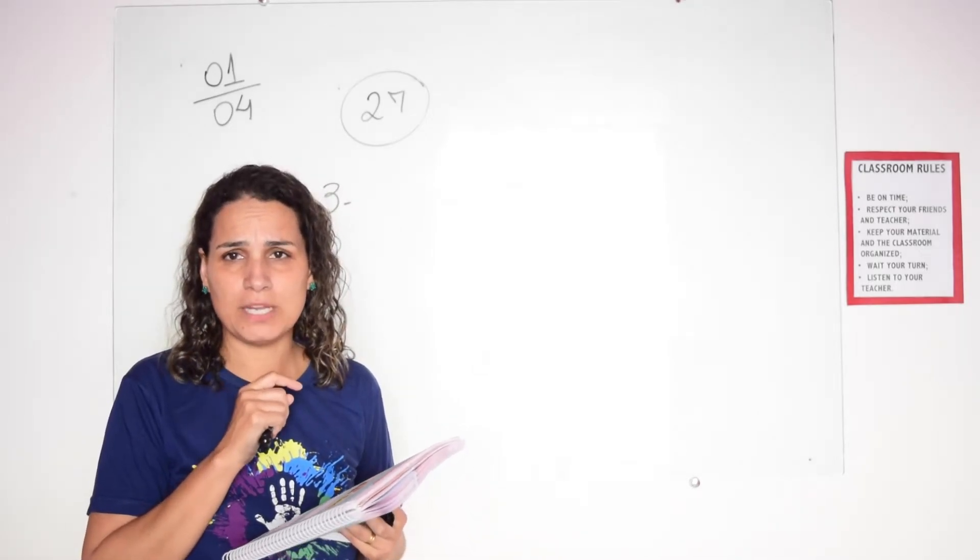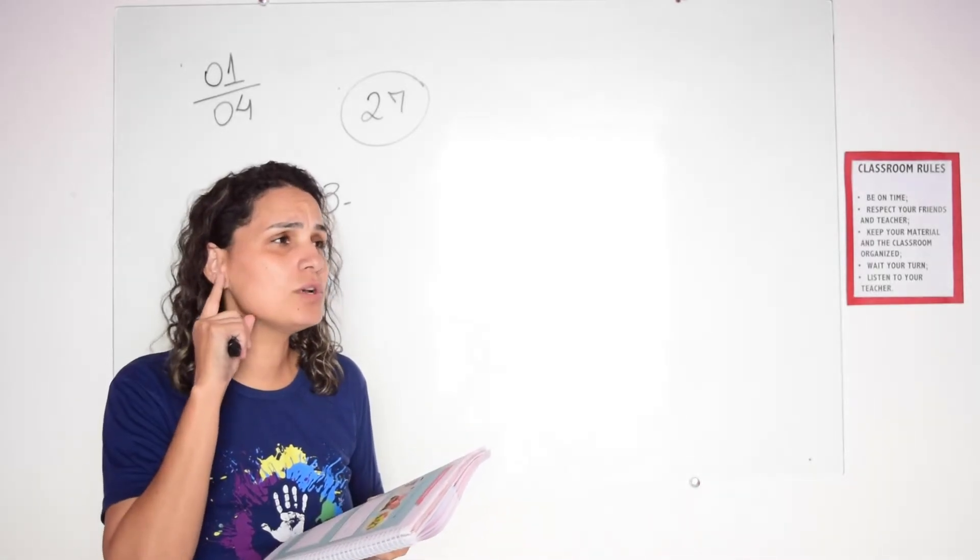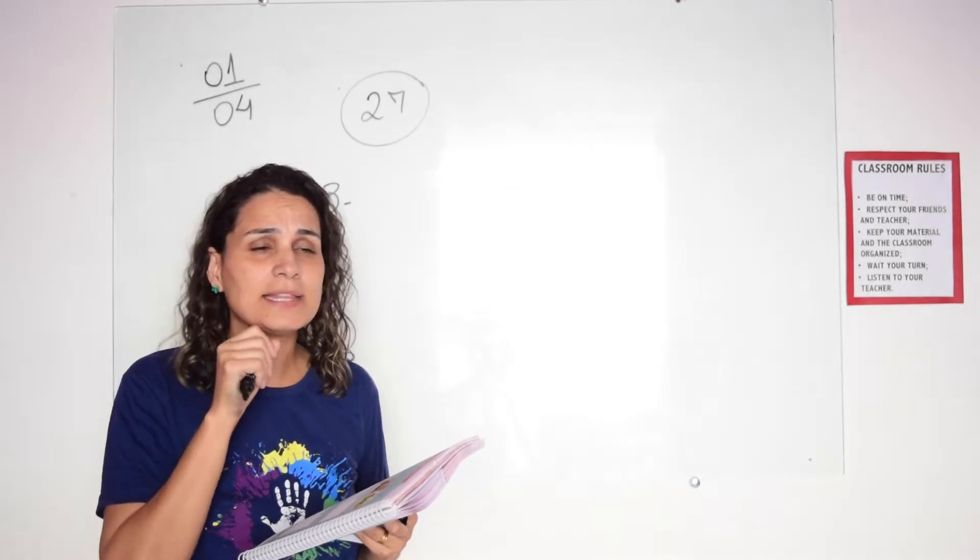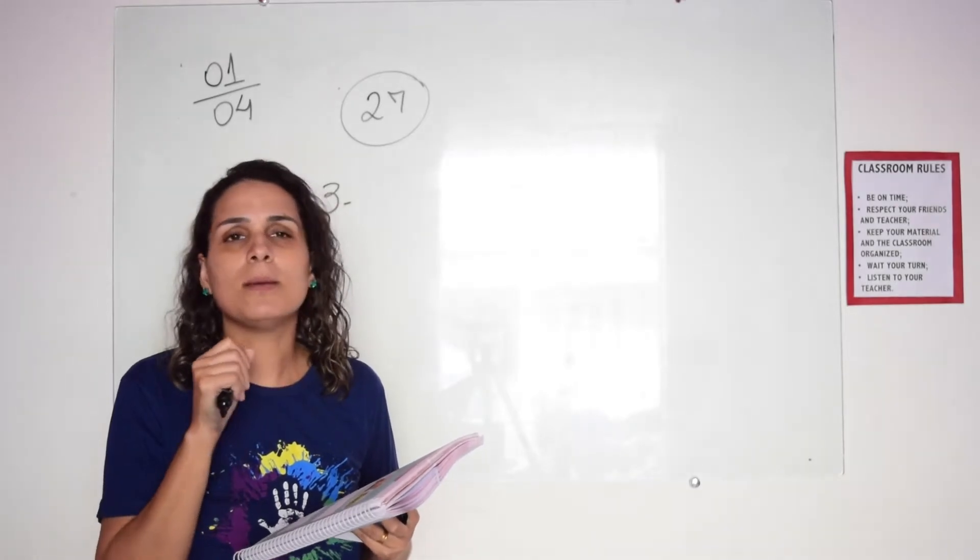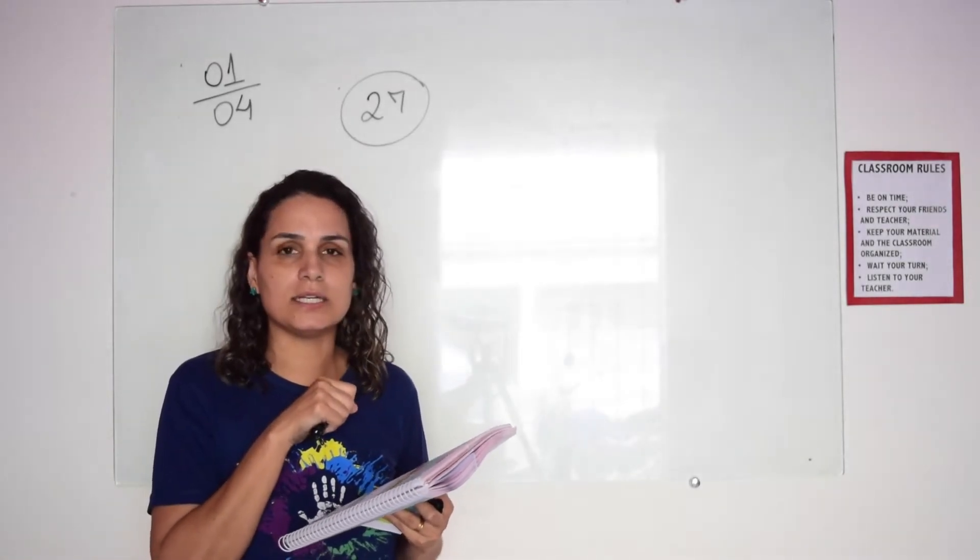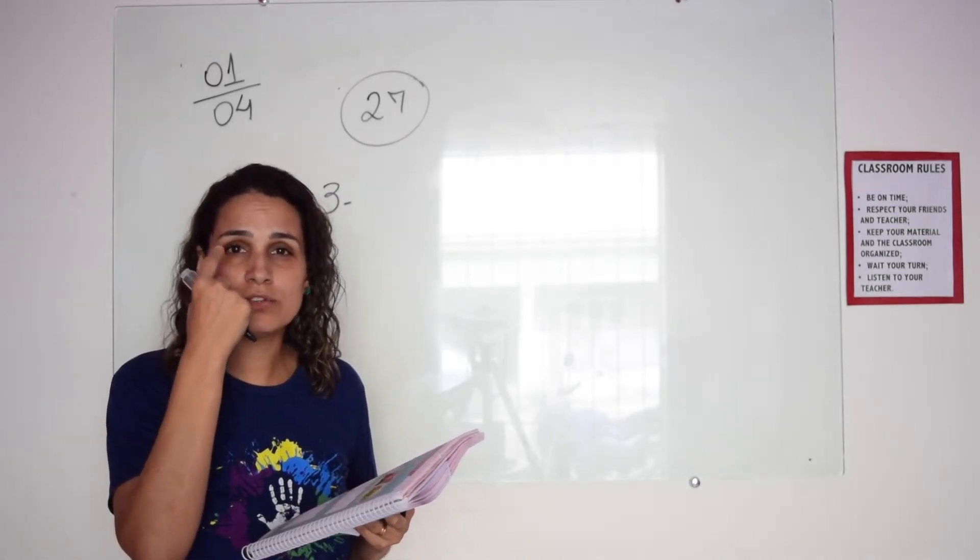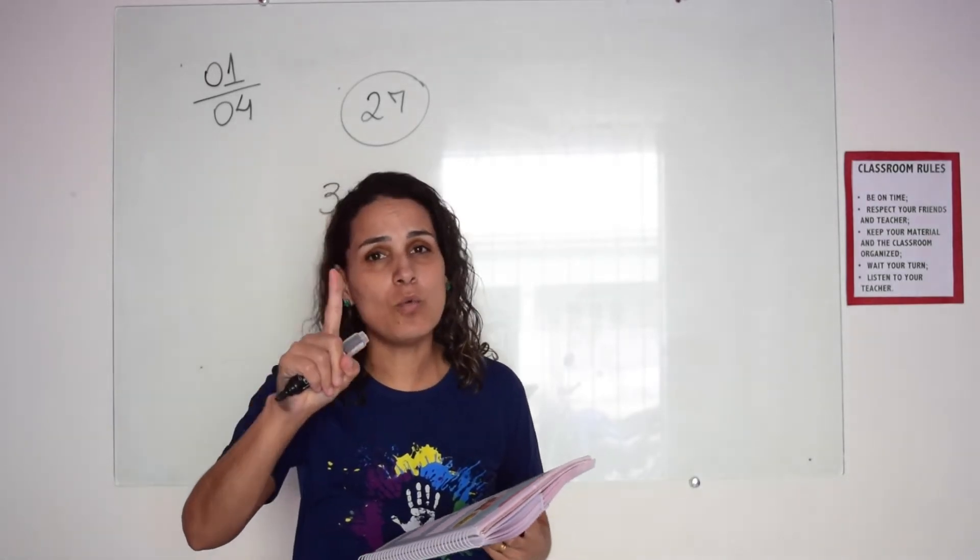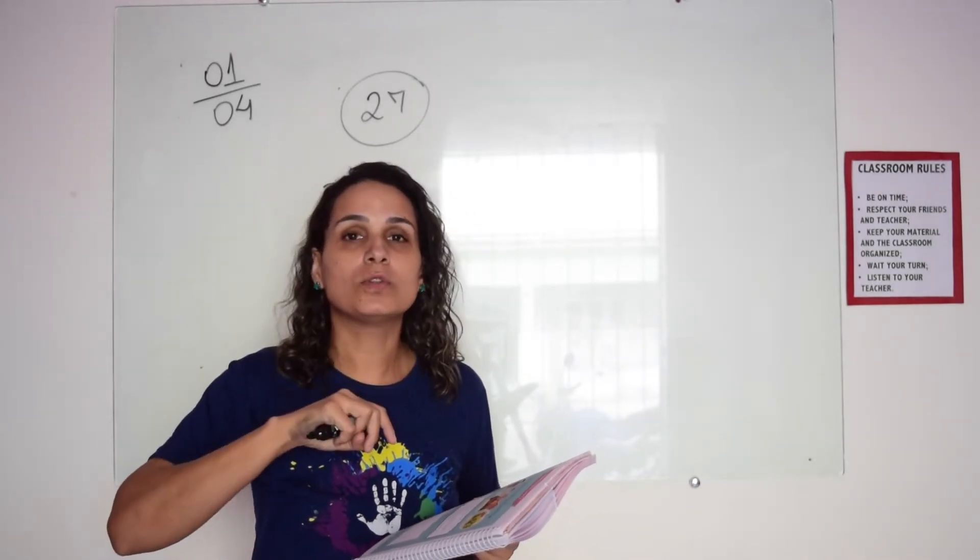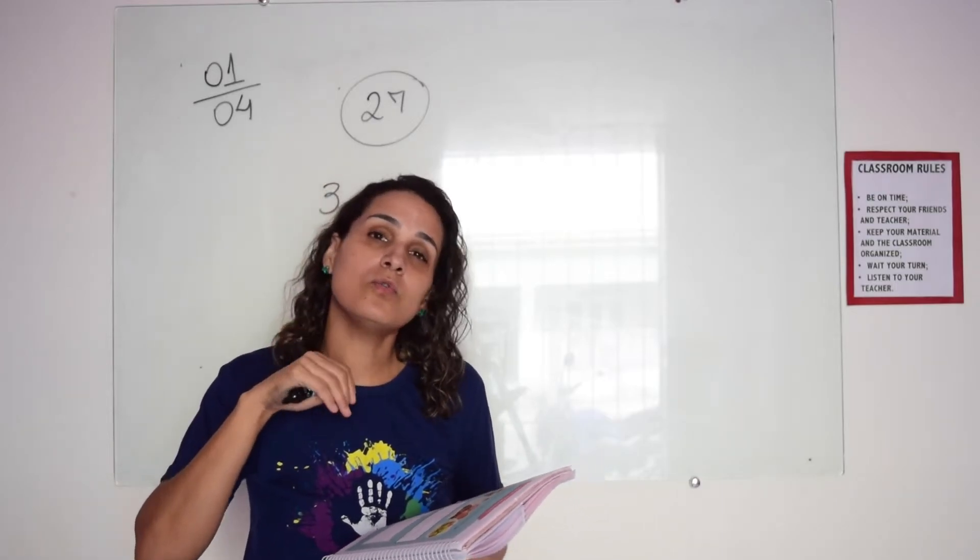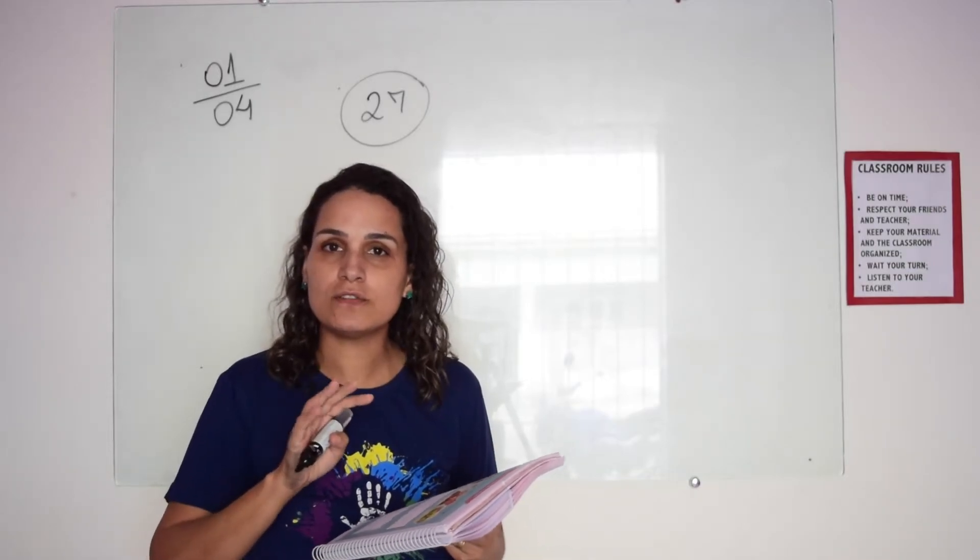Number the pictures. Vocês vão enumerar as figuras. Qual é a primeira coisa que vocês ouviram quando vocês apertarem o áudio? O primeiro que vocês ouvirem, vocês vão colocar o number one. O segundo, number two. O terceiro, number three. E o último, number four. Muito facinho essa atividade.